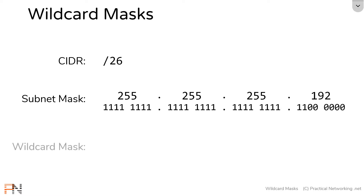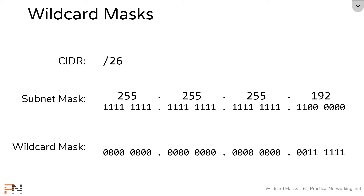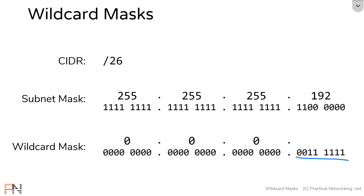A wildcard mask is the same thing, except wherever there is a 1 there'll be a 0, and wherever there's a 0 there'll be a 1, which would give you something that looks like this. And again, if we translate each of those octets into their decimal counterparts, for these three octets we would have the decimal value of 0, and then for this last one we would have the decimal value of 63.